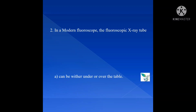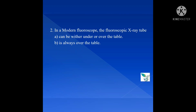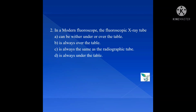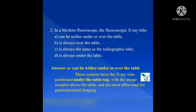Moving on to the second question: In the modern fluoroscope, the fluoroscopic x-ray tube — Option A: can be either under or over the table; Option B: is always over the table; Option C: is always the same as the radiographic tube; Option D: is always under the table. The answer is Option A. The fluoroscopic system has an x-ray tube positioned under the table top with the image receptor above the table, and it is often used for gastrointestinal imaging.